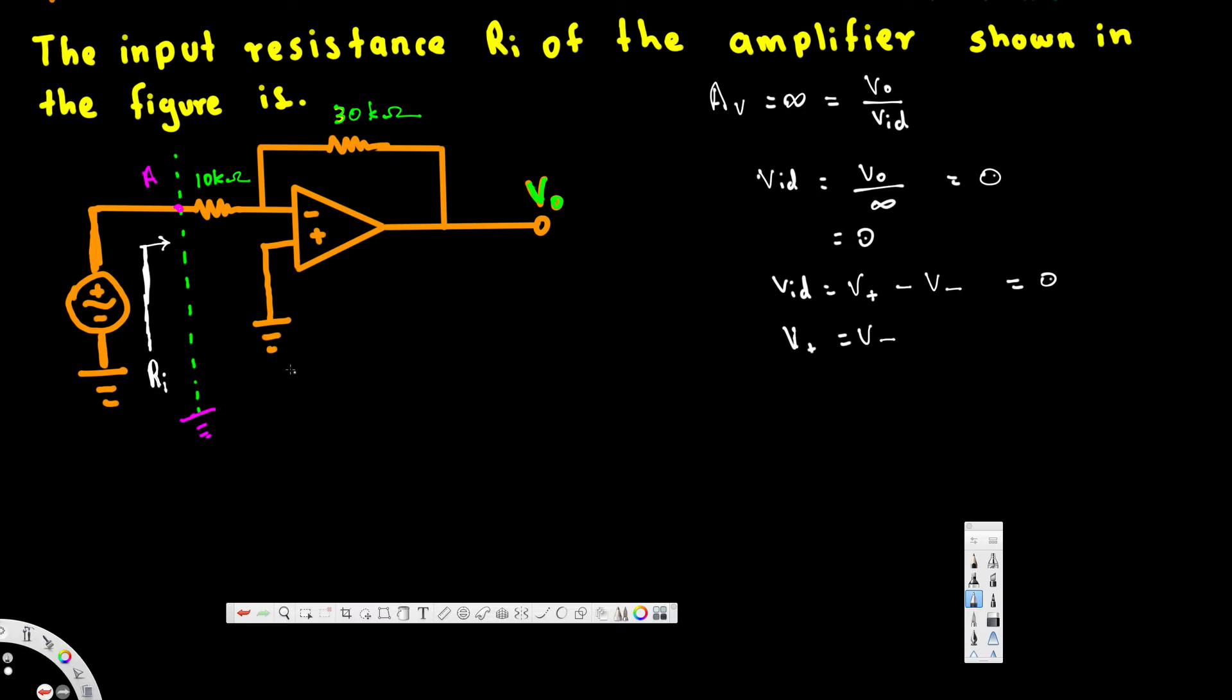If this is true, then here we know that the voltage across the positive terminal is equal to zero voltage because that is connected to the ground. Since this is zero voltage, this is also going to be zero voltage according to the ideal op-amp characteristics.